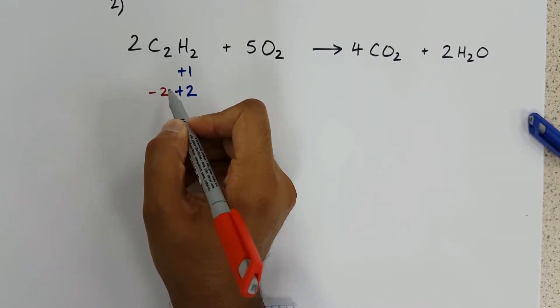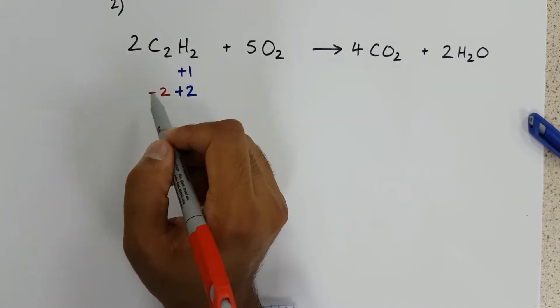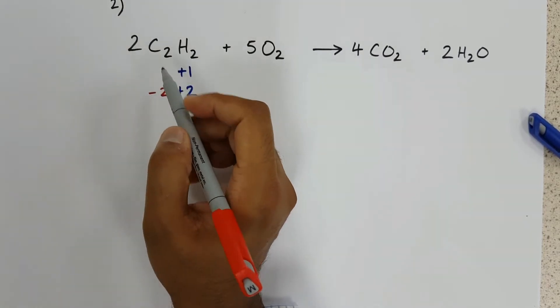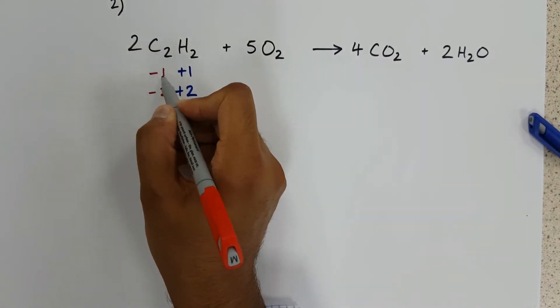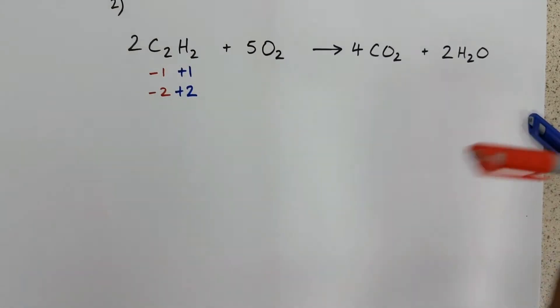...it'll be minus two overall on this side of the molecule. Because there are two carbons, we divide that by two and we get an oxidation number of minus one.